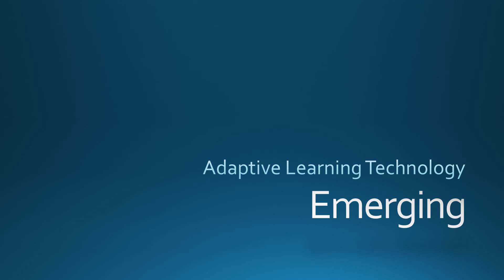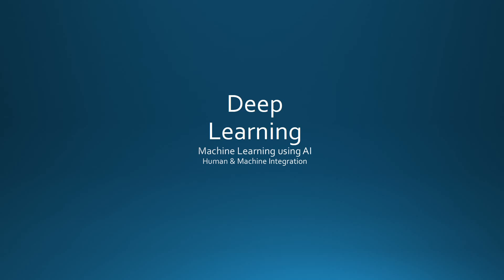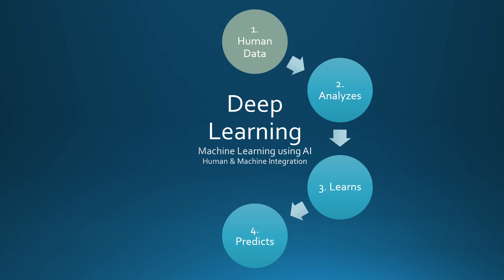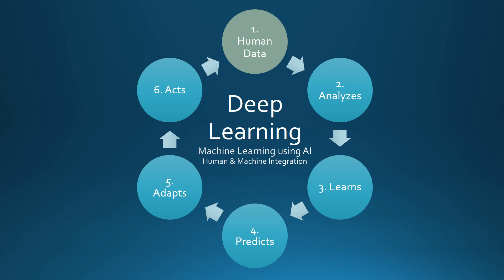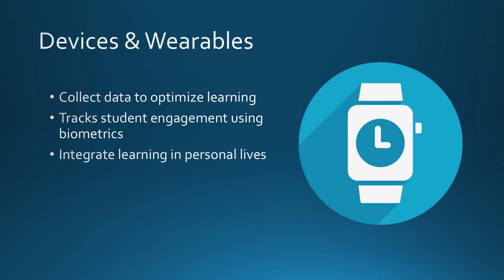Adaptive learning and related technologies continue to evolve. Deep learning is machine learning that integrates machine and human environments; human interactions are input as data, and deep learning uses analytics to analyze that data. Artificial intelligence uses data to learn tasks without being explicitly programmed, predicting learner behavior and adapting to customize the learner's pathway by creating tasks for the learner. Devices and wearables will provide more opportunity to collect data to optimize learning, sending data to teachers to track learner engagement using biometrics and integrating learning into personal lives using schedules developed through analysis of life context and space.